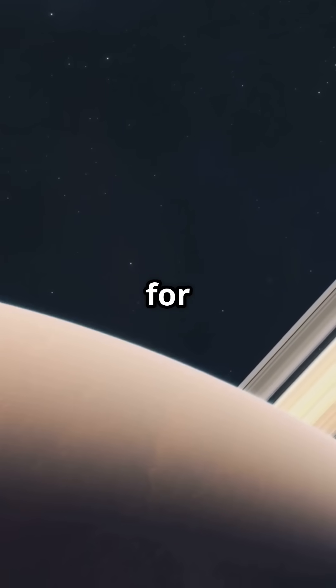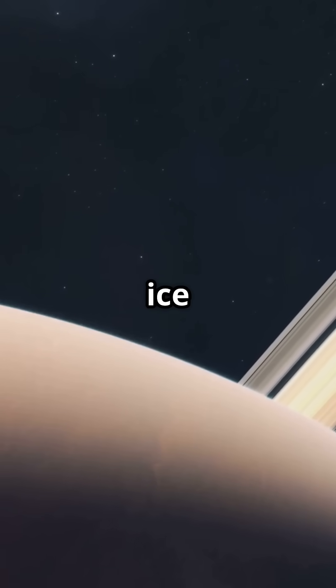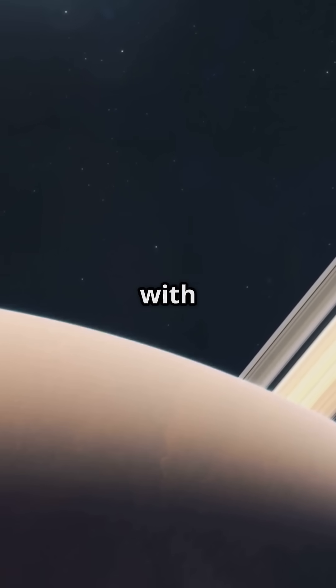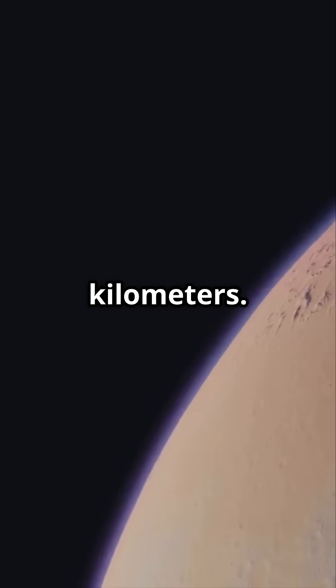Next, Saturn, famous for its stunning rings, which are made of ice and rock. Saturn is almost as big as Jupiter with a diameter of about 116,000 kilometers.